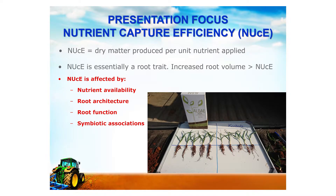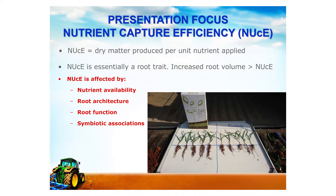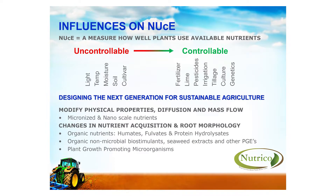Nutrient capture efficiency is equivalent to the dry matter produced per unit of nutrient applied, and it is mainly a root trait. An increase in root volume is an indication of nutrient capture efficiency — the higher your root volume, the higher your nutrient capture efficiency would be. Nutrient capture efficiency is affected by the availability of your nutrients, the root architecture, the function of your roots, and the symbiotic associations within the roots. Nutrient capture efficiency is a measure of how well plants use the nutrients available to those plants.